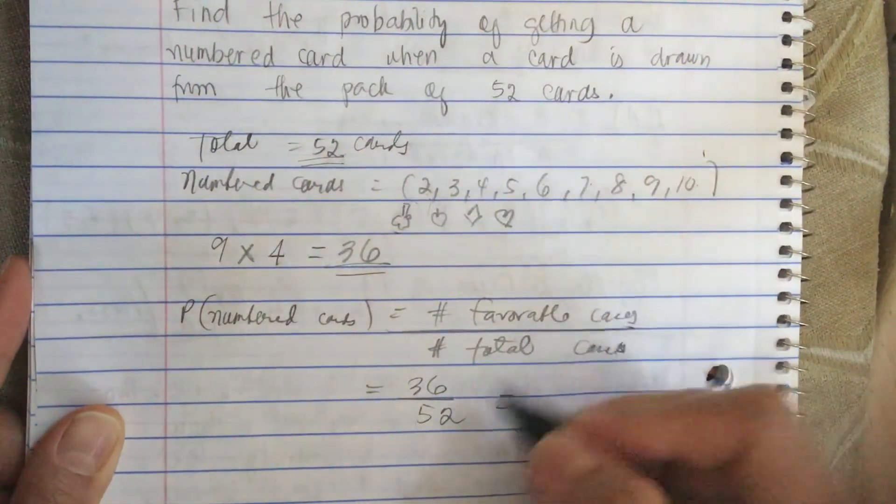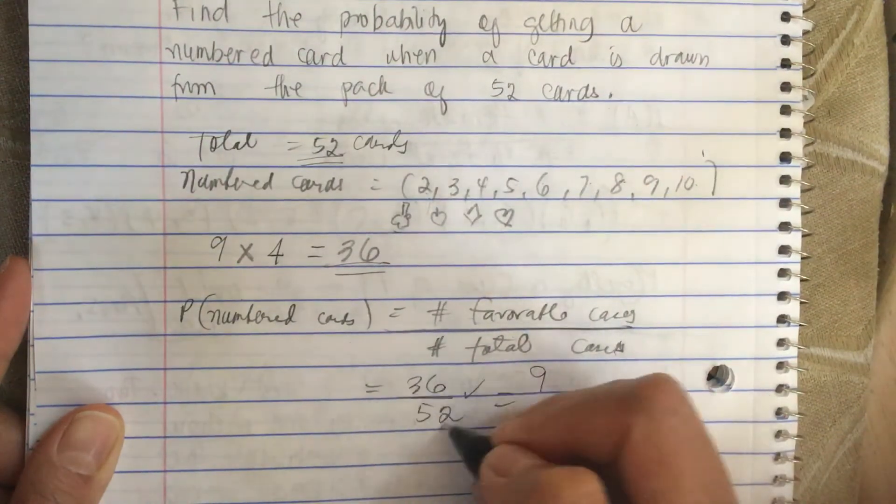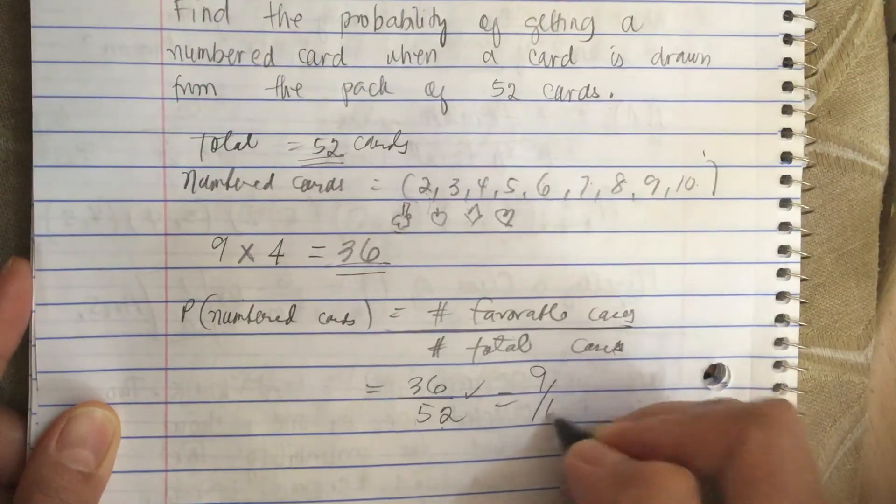So now we reduce this. We always have to reduce this to lowest terms, so this is equal to 9 over 13.